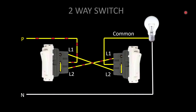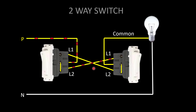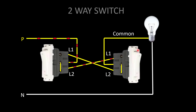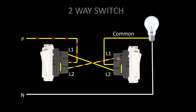In the third scenario, switch one is on and switch two is on — the light will be off. Phase comes to the common terminal, then with switch one on, the current goes through L2 to L1 of the second switch. In the second switch, since it is on, common and L2 are in connection — not L1. So the circuit is broken at L1, and the light will be off.